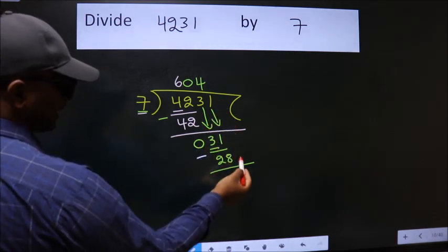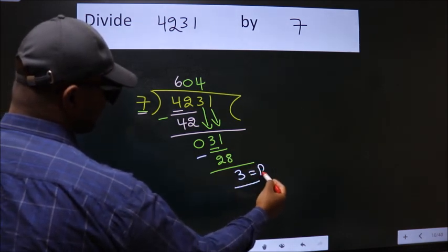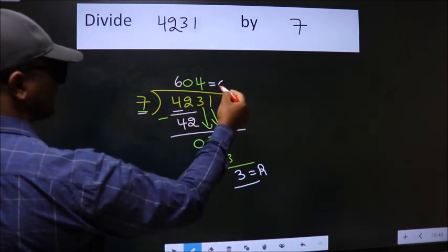No more numbers to bring down. So, we stop here. This is our remainder. This is our quotient.